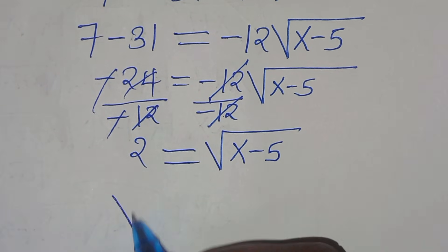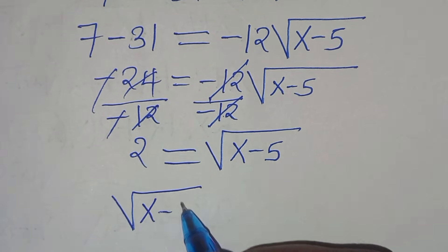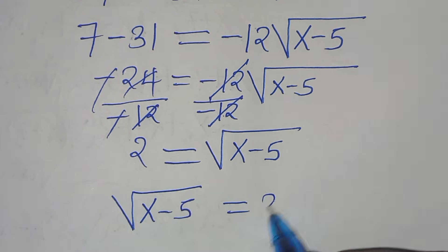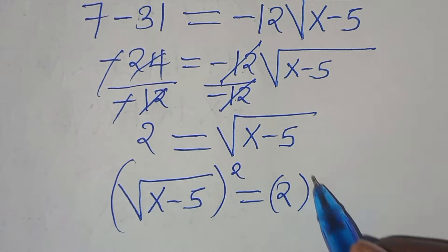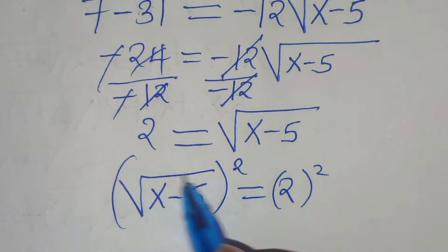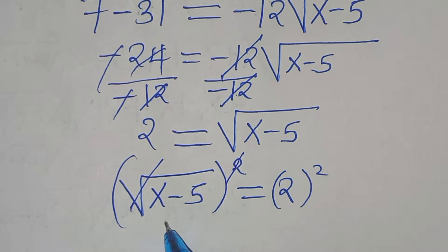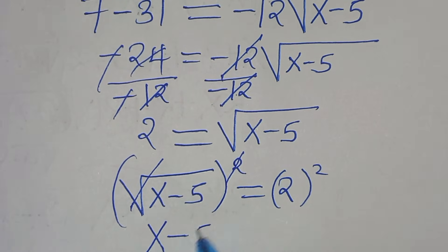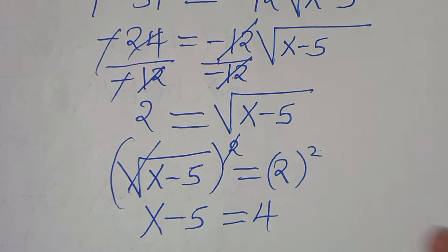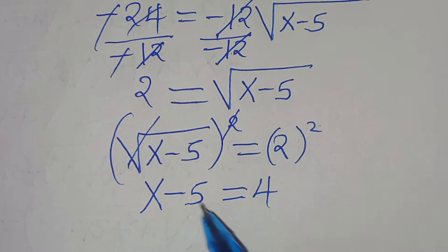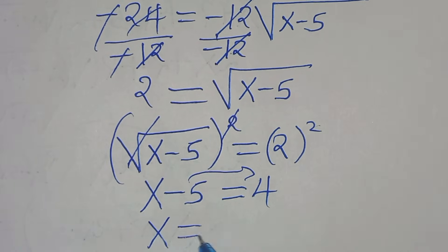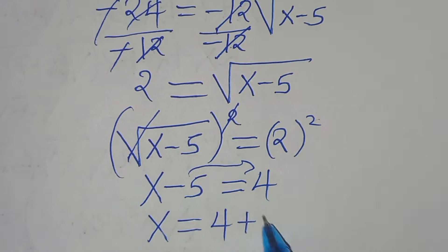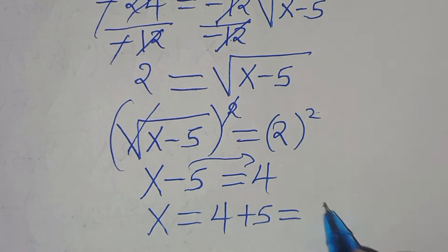So the square root of x minus 5 equals 2. Squaring both sides to eliminate the square root: x minus 5 equals 4. Taking minus 5 to the right-hand side: x equals 4 plus 5, which equals 9.